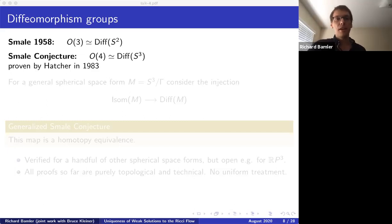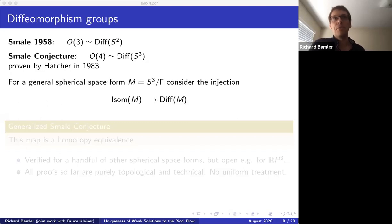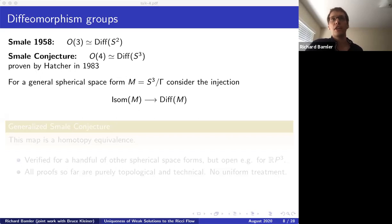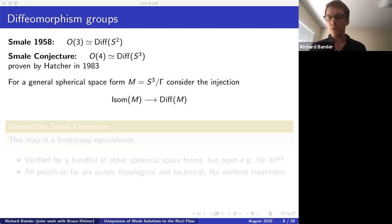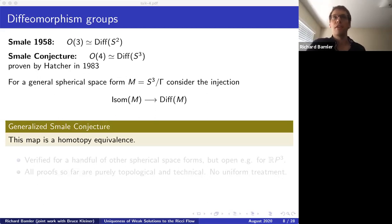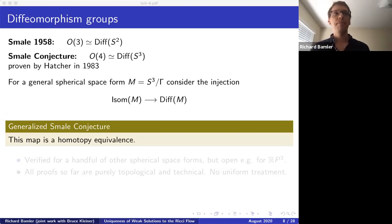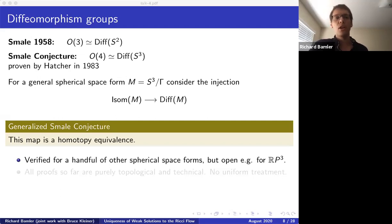In dimension three there are many other interesting manifolds, notably spherical space forms — the round three-sphere quotiented by a finite subgroup. To understand the diffeomorphism group, one considers the natural injection of the isometry group (for S³ this is O(4)) into the space of diffeomorphisms. The generalized Smale conjecture states that this map is a homotopy equivalence. This was verified for a handful of spherical space forms such as lens spaces and RP³, but it remained open for RP³ and all existing proofs were purely topological and non-uniform.